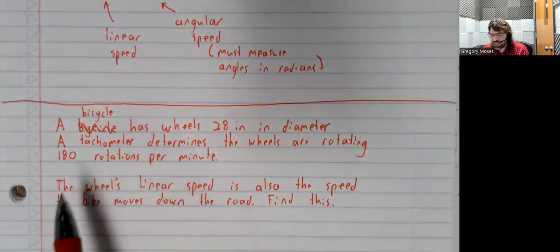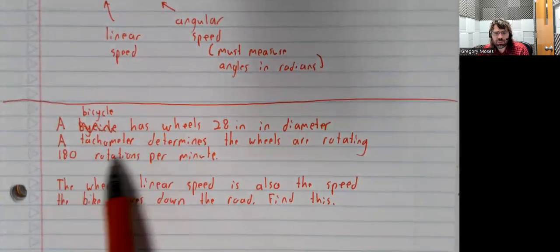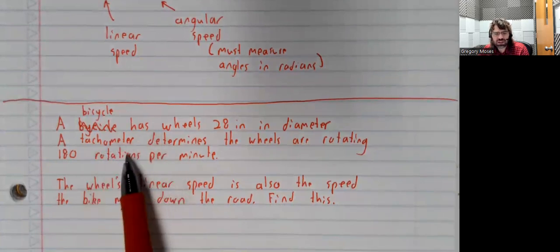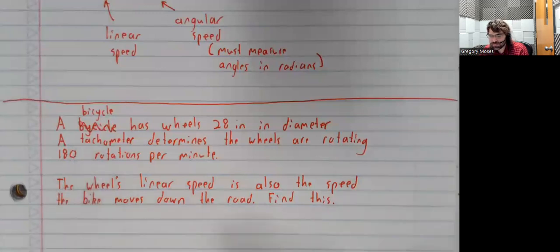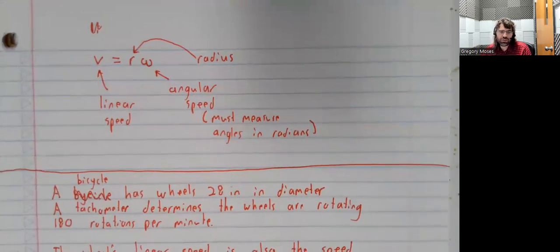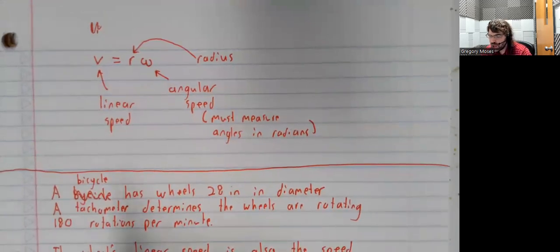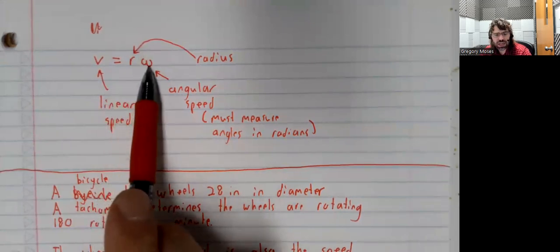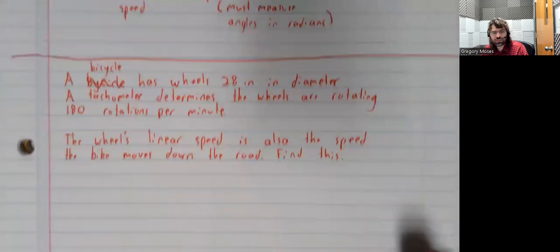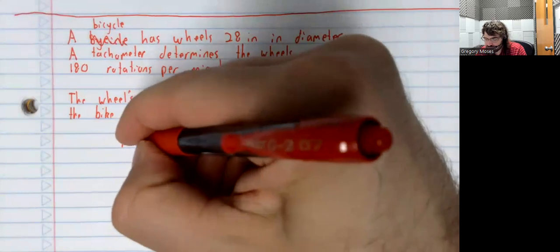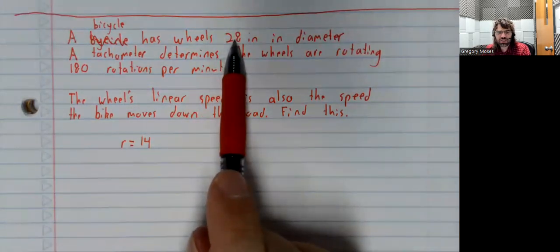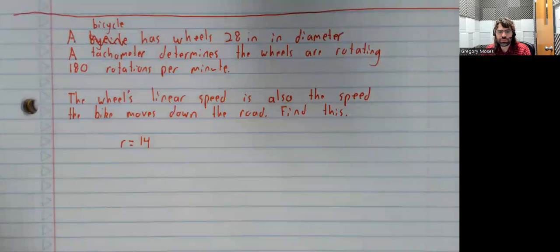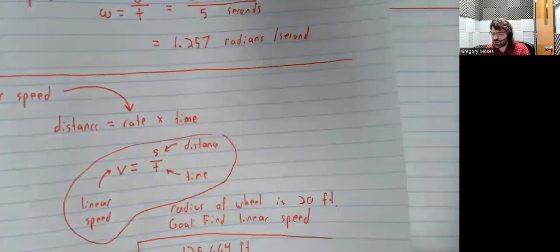And rotations per minute is telling you something about angular speed. It's telling you that every minute we go through 180 full rotations of the circle. So if we're going to use this formula for the linear speed, we need the radius of the wheel, and we need the angular speed. And hopefully, the radius of the wheel is no big mystery. The radius is half the diameter. But what about the angular speed?